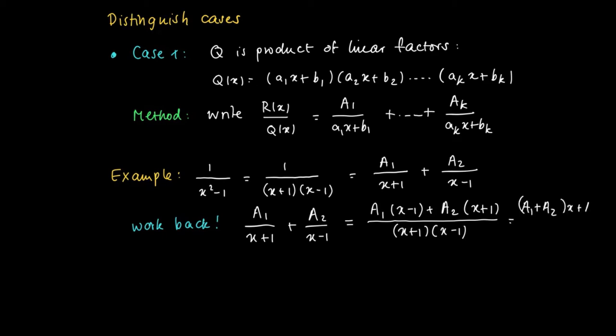So (A₁+A₂)x + (A₂-A₁) divided by (x+1)(x-1) should be equal to 1/(x²-1). And this should hold for numerous values of x, so basically this states that (A₁+A₂)x + (A₂-A₁) should be the same as 1 for numerous values of x. This should be an identity.